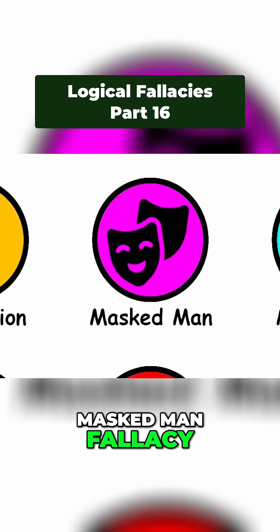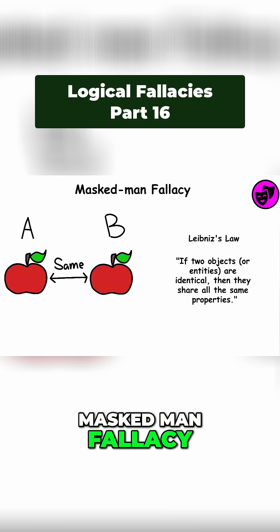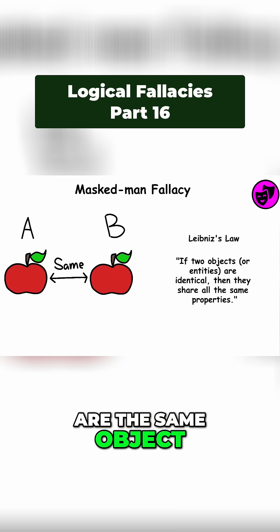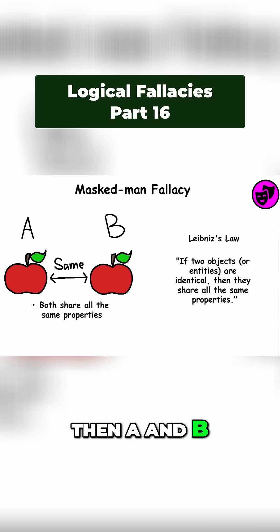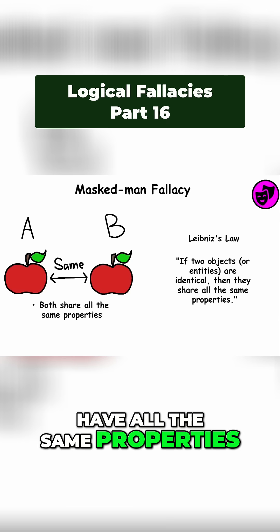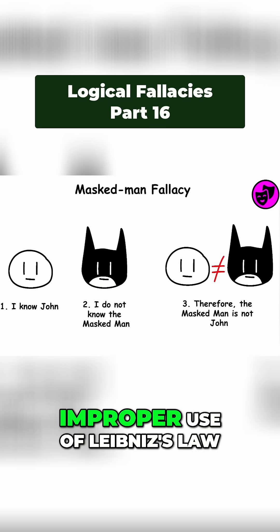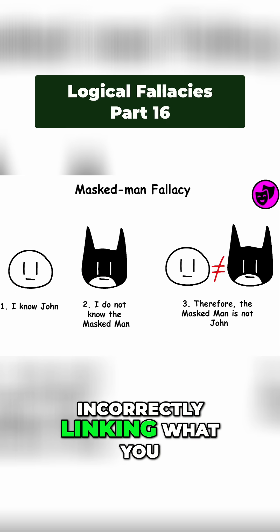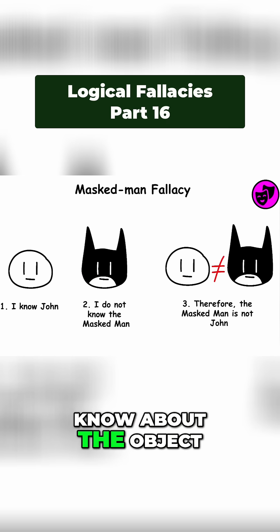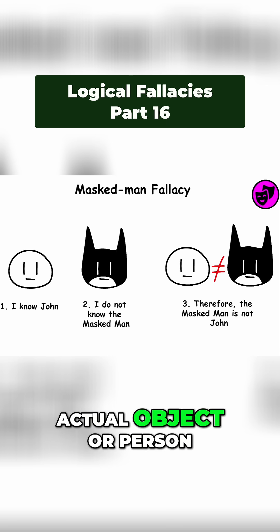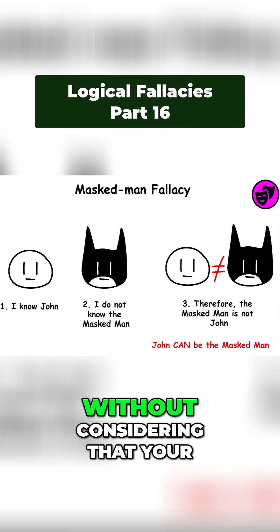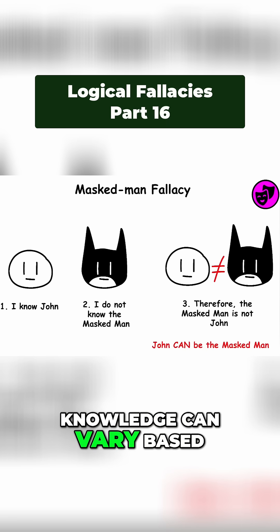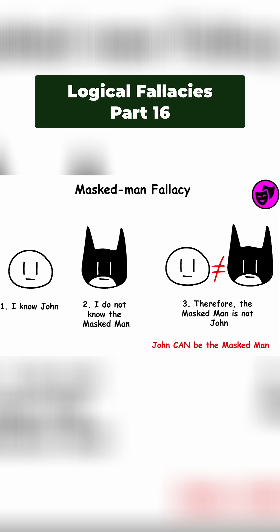Masked Man Fallacy. Leibniz's Law states that if A and B are the same object, then A and B have all the same properties. This fallacy is an improper use of Leibniz's Law, incorrectly linking what you know about the object or person with the actual object or person, without considering that your knowledge can vary based on how it's described or presented.